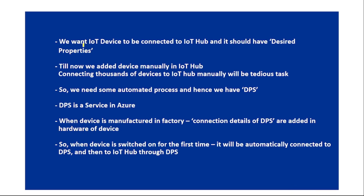We want an IoT device to be connected to an IoT Hub — that's the ultimate goal. The IoT device should be able to communicate, meaning it should be able to send and receive messages from the IoT Hub, and it should also have desired properties.